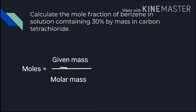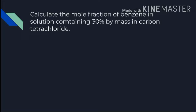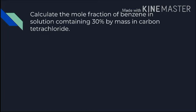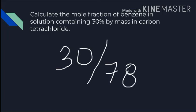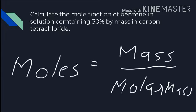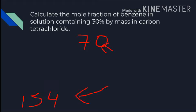First, calculate the number of moles of benzene. Number of moles of benzene = 30 grams / molar mass of benzene. Molar mass of C₆H₆: 6 carbons give 72, plus 6 hydrogens gives 78. So 30 divided by 78 gives number of moles of benzene. Next, number of moles of CCl₄ = given mass / molar mass of CCl₄. Molar mass of CCl₄: 1 carbon + 4 chlorine atoms = 154. Given mass is 70 grams, so 70 divided by 154 gives number of moles of CCl₄.